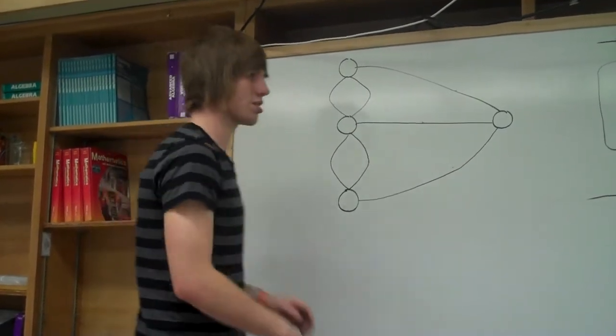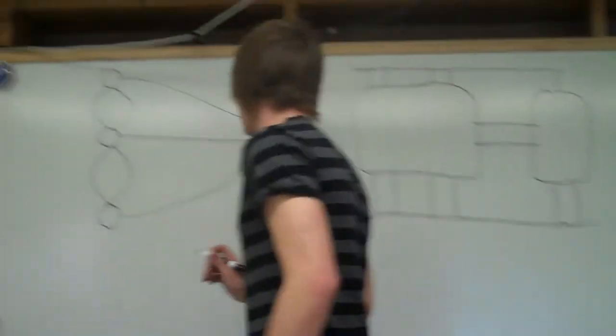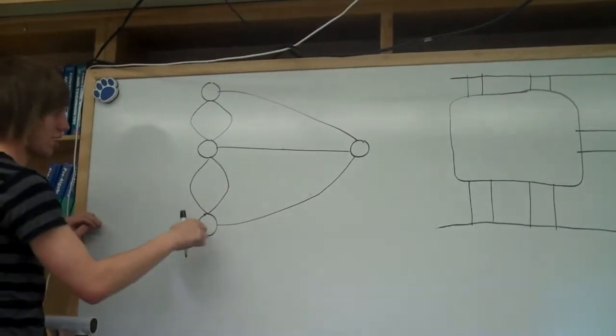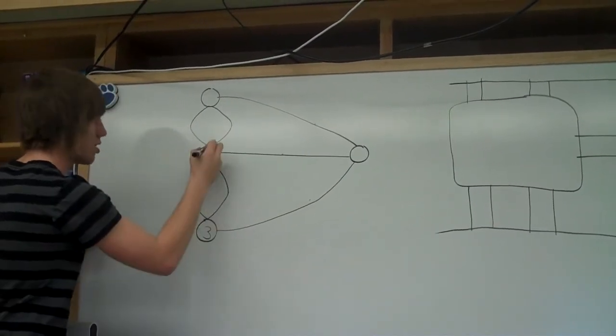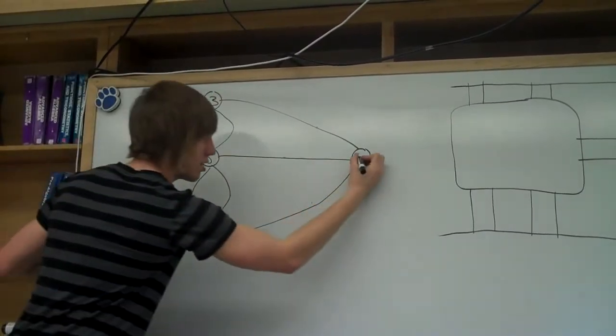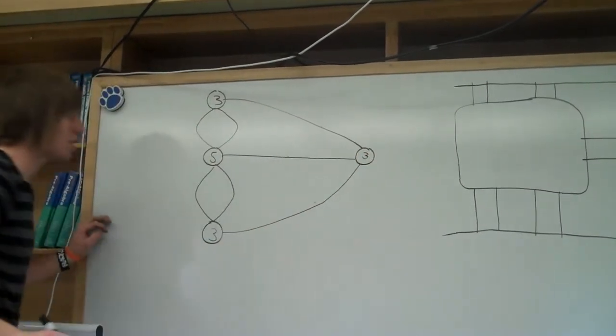So, the thing is, each of these has a certain number of lines connecting to them. This one has three, this one has five, this one has three, and this one has three.